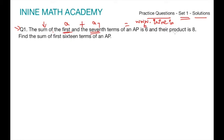At the same time, the product of first and seventh term is 8. So A into A7 is equal to 8, and what we need to find is sum of first 16 terms. Let us write what is given.